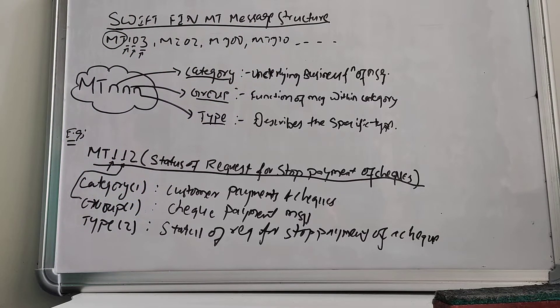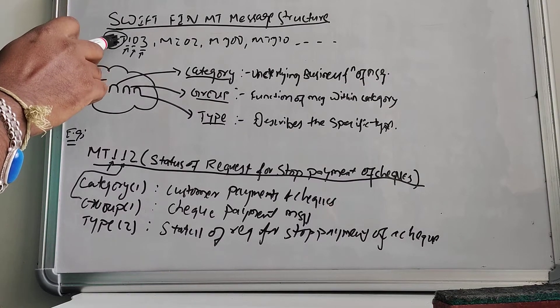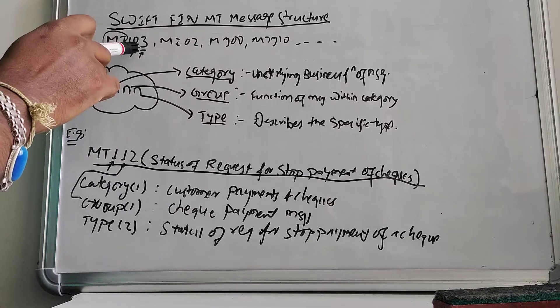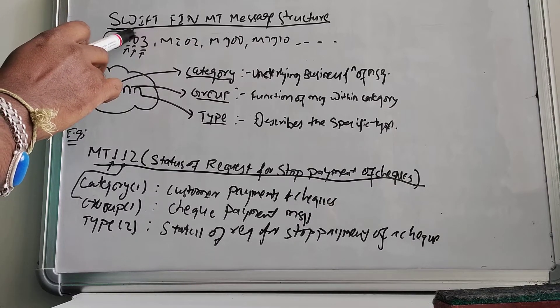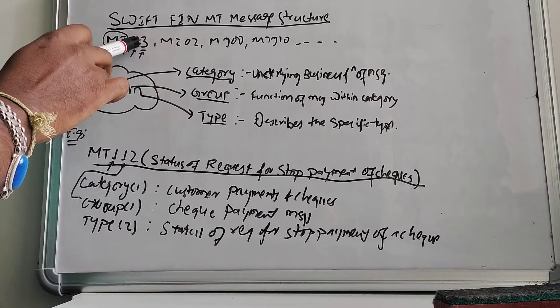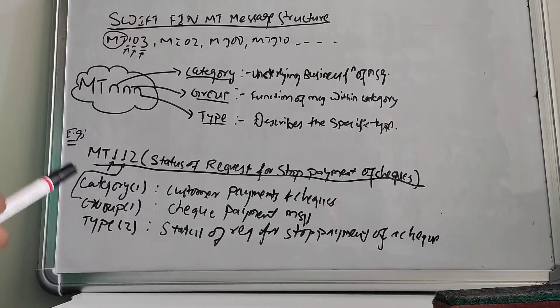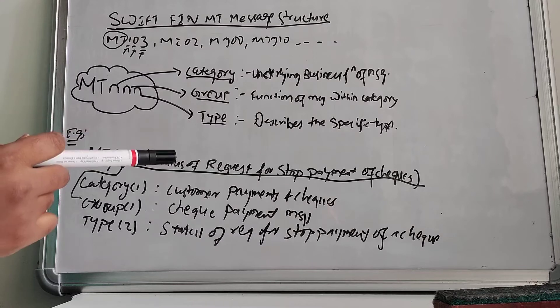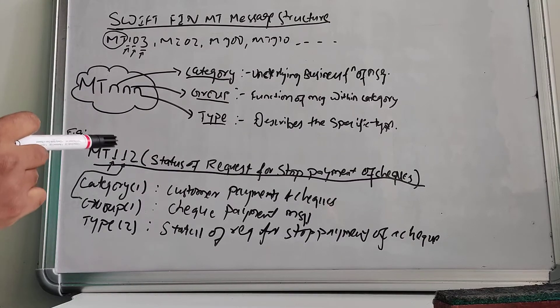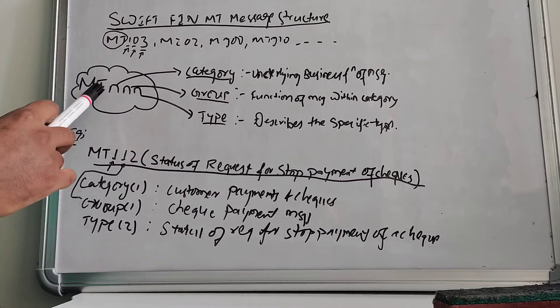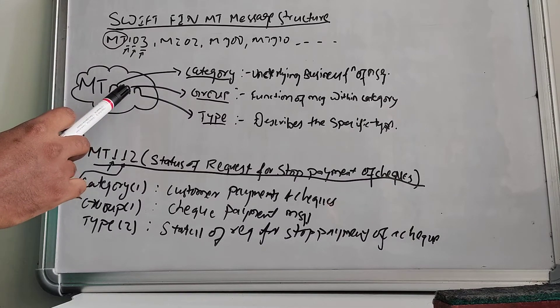But let's understand the logic behind each part of the MT messages. For example, in MT103, what does the 1 signify, the 0 signify, and the 3 signify? Let's understand these things. MT messages are basically divided into three sub-parts. Let's take an example: MT and then every SWIFT MT message will have three digits following MT.